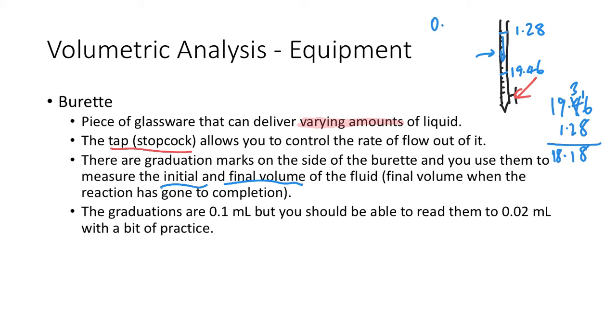The graduations are at 0.1ml intervals, but you should be able to read to the next decimal place, at least to 2, 4, 6, 8, or 0. That's why you can read to 1.28ml but not 1.27ml, or 19.46ml but not 19.45ml. You should be able to read them to 0.02ml with a bit of practice.